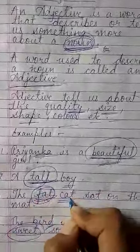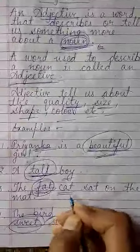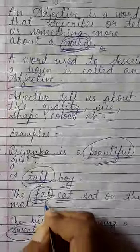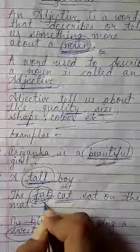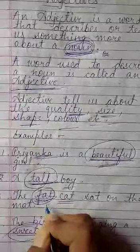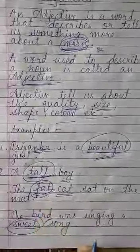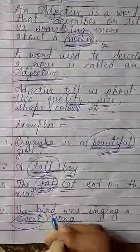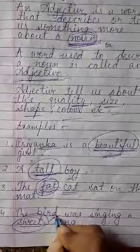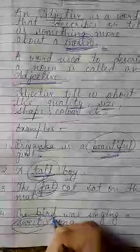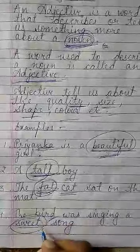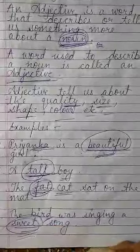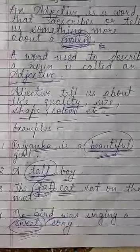Yaha pe cat jo hai woh noun hai. Or cat kaisi hai? Uska adjective kya hai? Fat — kaisi cat hai? Fat cat hai. Yaha pe bhi aisa hi hai — bird jo hai noun hai. Or bird kaisa gaana karti hai? Singing a sweet song. 'Sweet' song, uski quality hai.